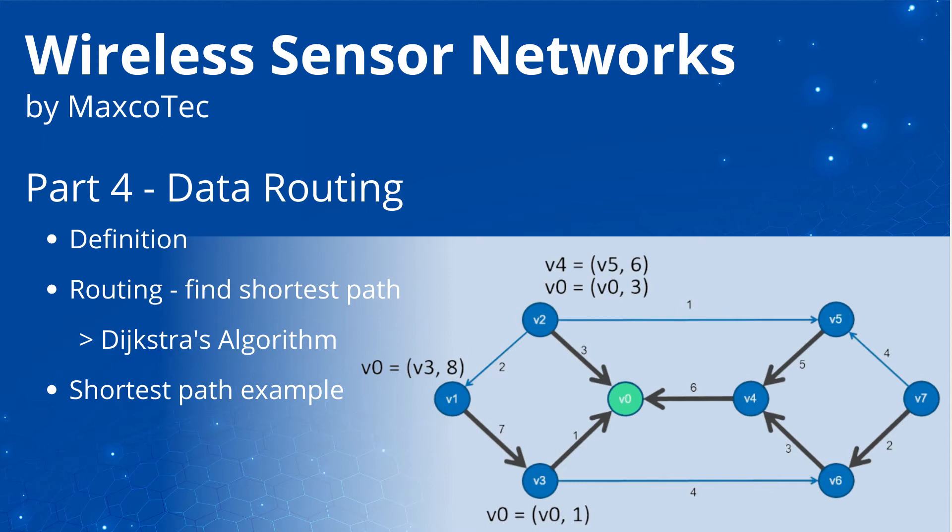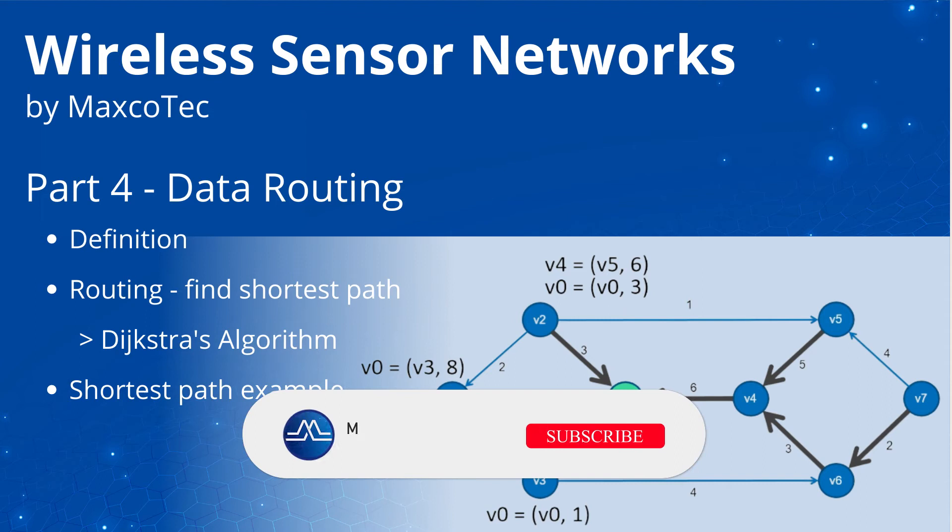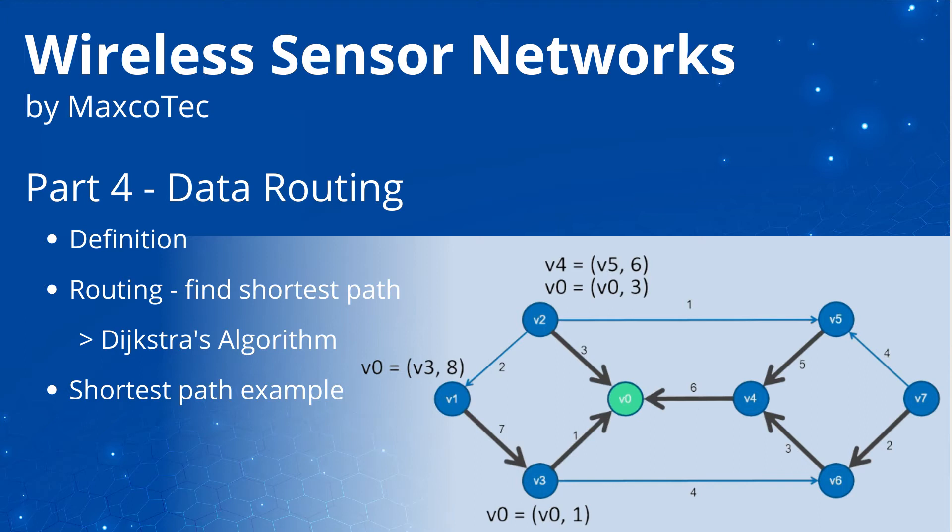We will first cover the definition which includes what is the goal of wireless sensor networks and what is the solution and how it works in a nutshell. Then we are going to look at the most popular example of data routing which is finding the shortest path using Dijkstra's algorithm and then moving on we will be looking at an in-depth example of how this finding shortest path works in real-world scenarios. So let's get started.